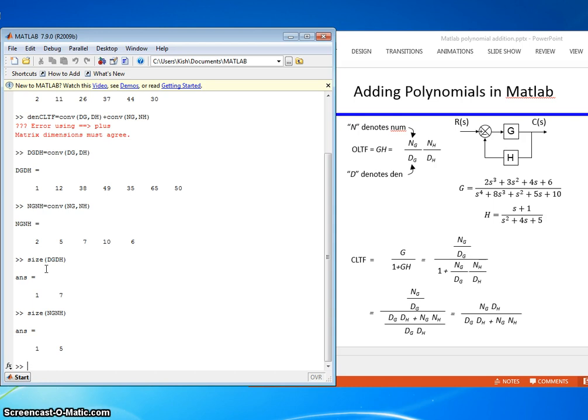So, we know they're off by 2. So, what we can do is we can go ahead and pad Ng Nh with a couple of 0s, leading 0s, and it'll be the same size.